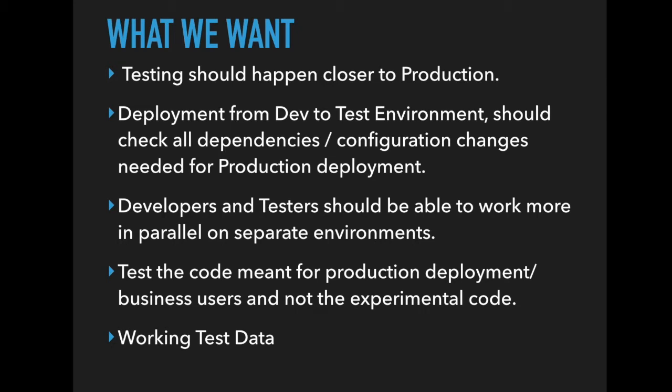When developers and testers work on the same environment, it often happens that a developer is working on the same database while a tester is testing. When a tester finds a bug and reports it, by the time the developer looks at it, the bug is no longer reproducible. The reason is that the test environment changed due to experimental code from the dev team, or test data got corrupted. So it is very ideal to have a separate development environment and a dedicated test environment so developers and testers can work in parallel.